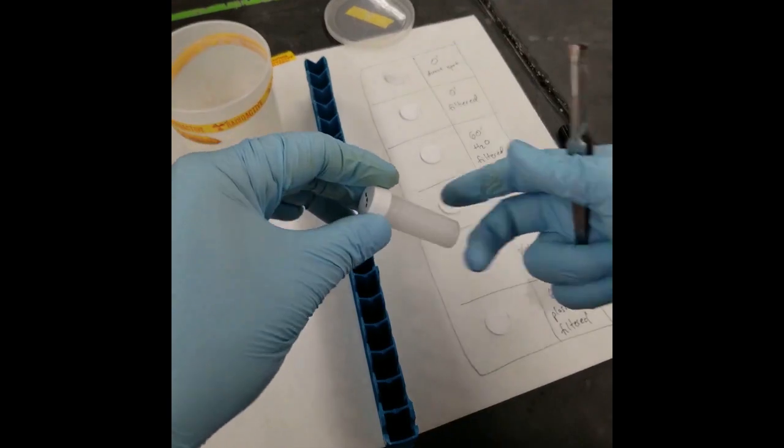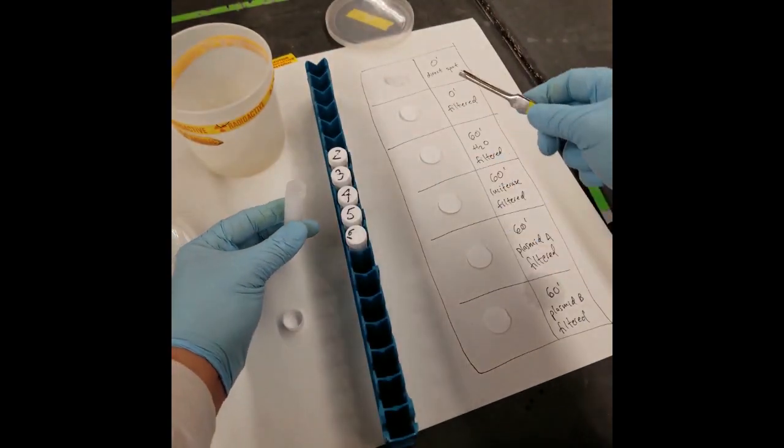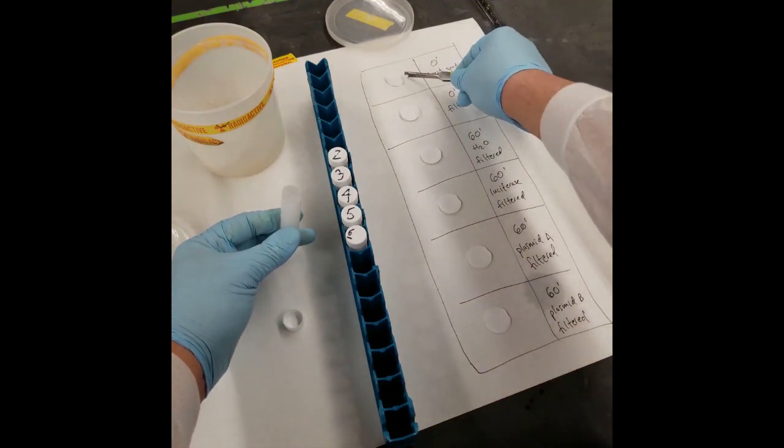For each vial, take the matching filter paper with your forceps and place it inside the vial, making sure that the filter paper is completely inside.